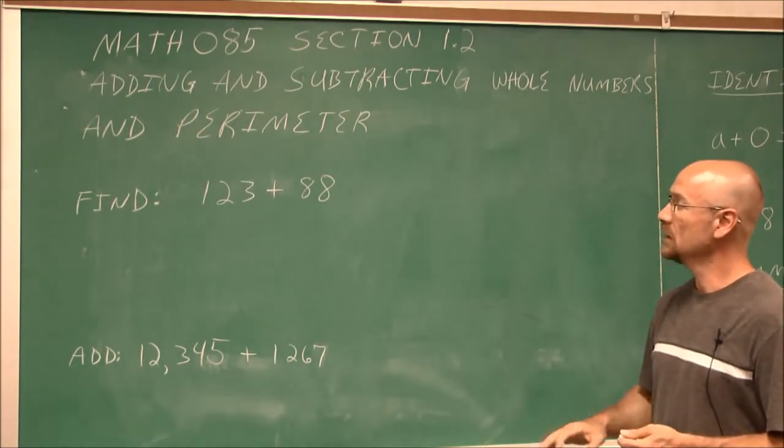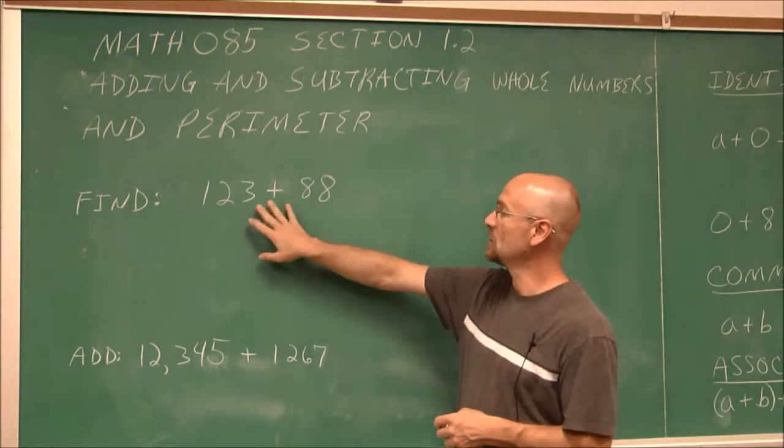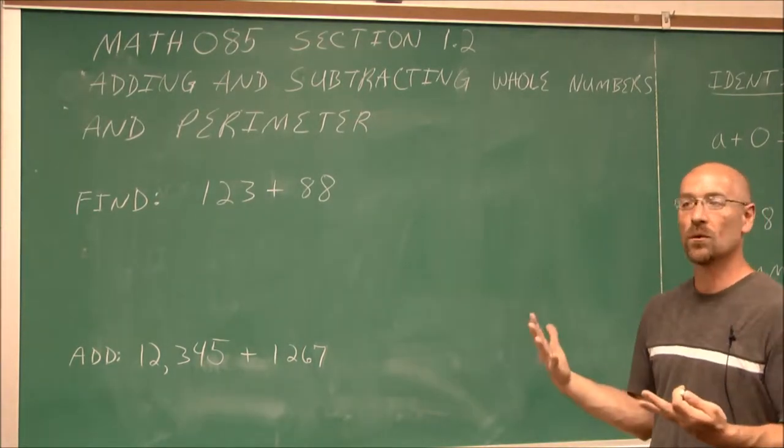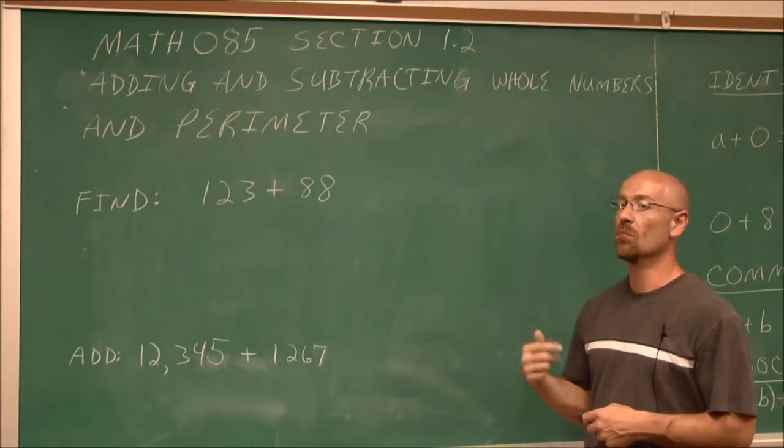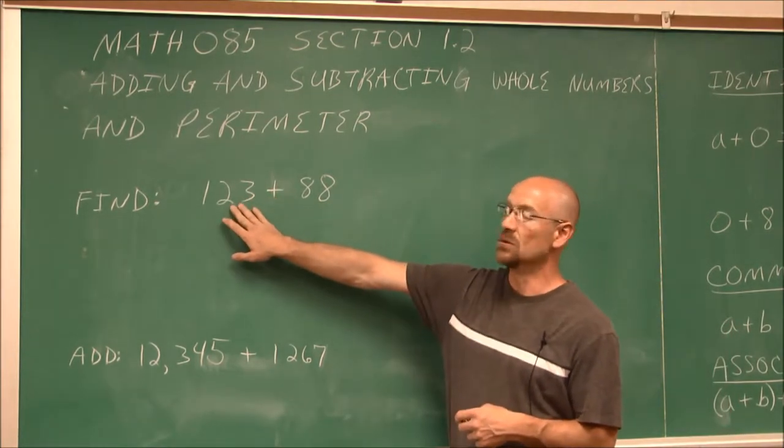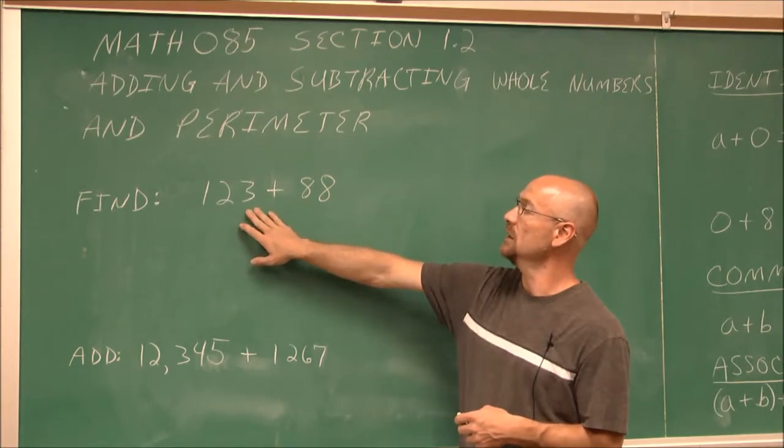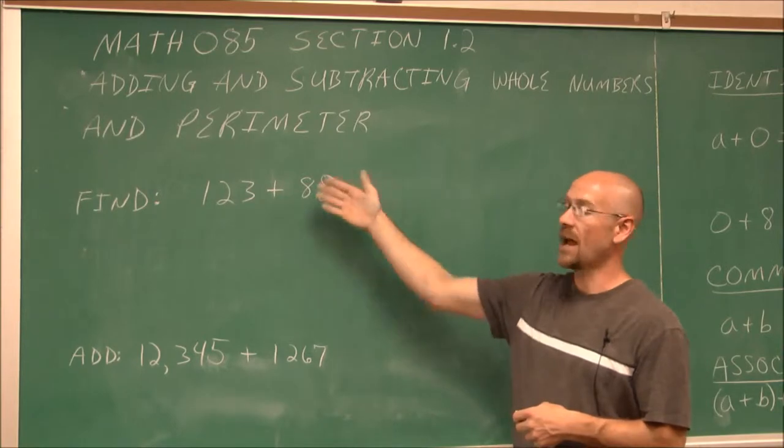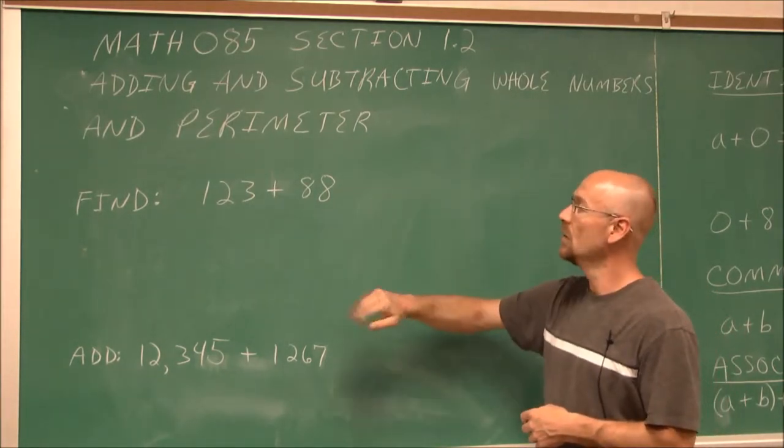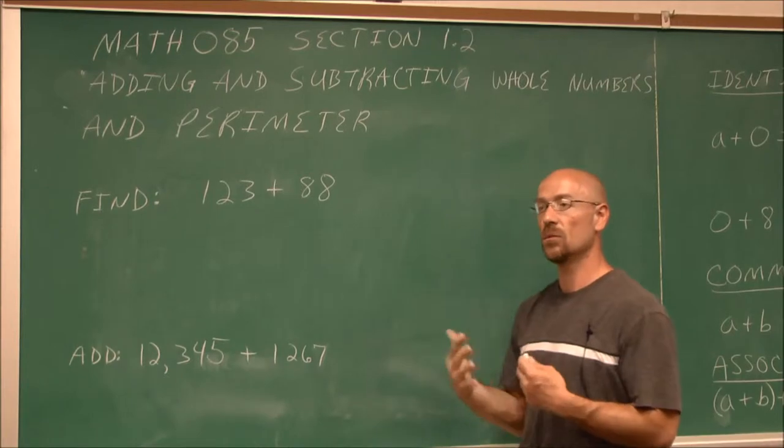So the first thing we're going to do is we're going to define what is addition. If we're asked to find the addition of these two numbers, we have to define some terms. We could use terms like add, added to, more than, increased by, or total. For example, if I say 88 is added to 123, or 123 more than 88, or 123 is increased by 88, or what's the total of 123 and 88, that tells us addition. So we have to be familiar with those terms.